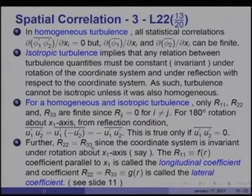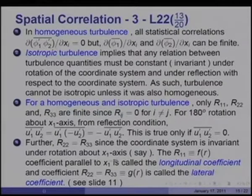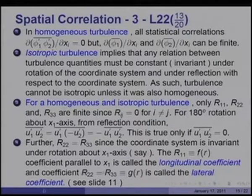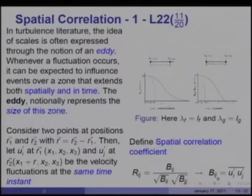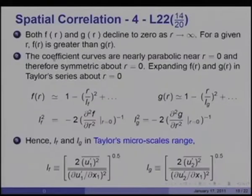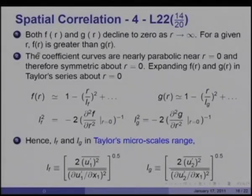For homogeneous isotropic turbulence, only r11, r22, and r33 are finite. Further, r22 and r33 are also equal since the coordinate system is invariant under rotation about the x1 axis. The r11 = f(r) coefficient parallel to the x1 axis is called the longitudinal coefficient, whereas coefficient r22 = g(r) is called the lateral coefficient. Both f(r) and g(r) decline to zero as r tends to infinity, and for a given r, f(r) is usually of bigger magnitude than g(r).